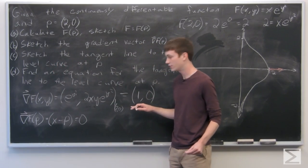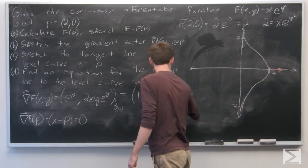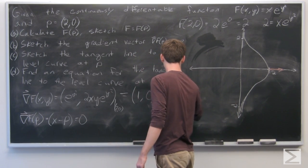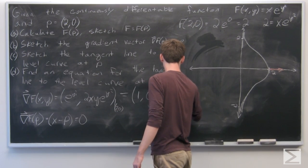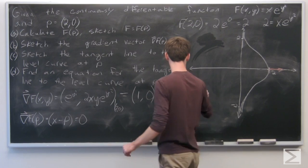So our gradient vector at p is (1,0). So we have (1,0) dotted with (x - p). So we'll write that component-wise,